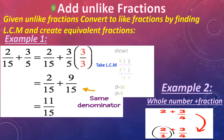Now, add unlike fractions. Unlike fractions have different denominators. To add them, we convert to like fractions by finding the LCM and creating equivalent fractions — same as what we learned in the previous video. First convert the unlike fractions into like fractions, then we can add.